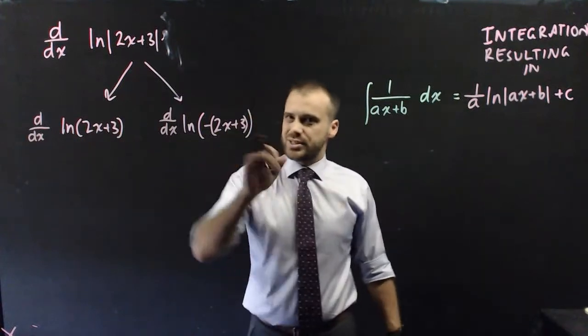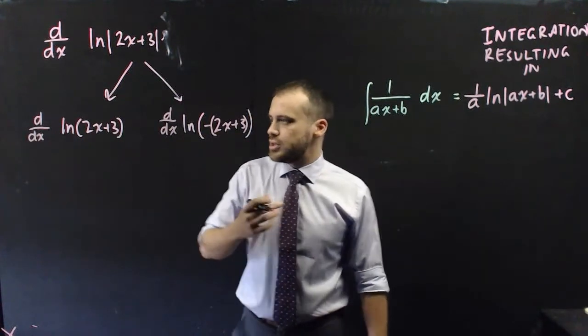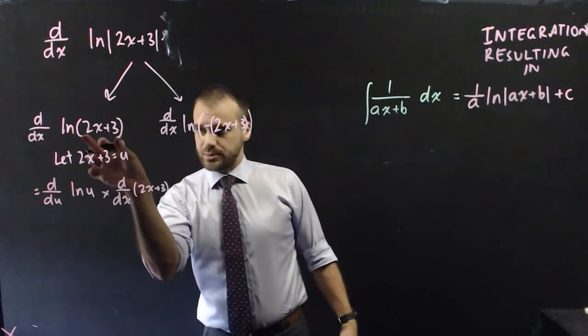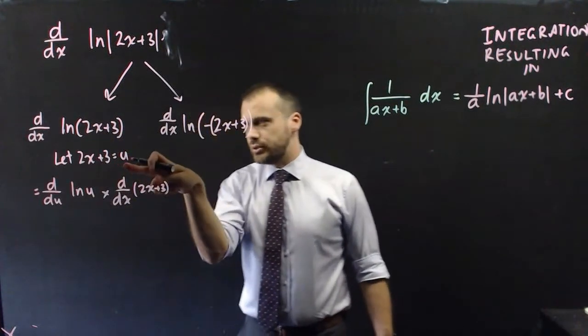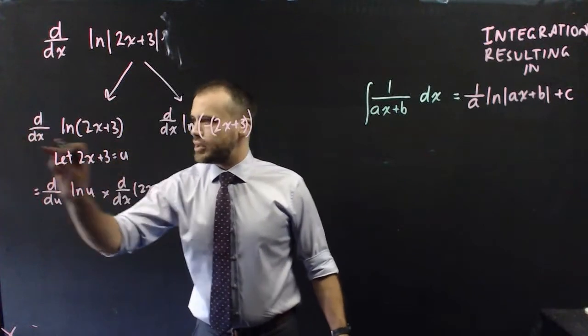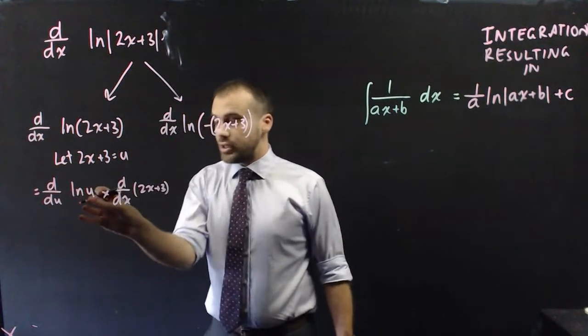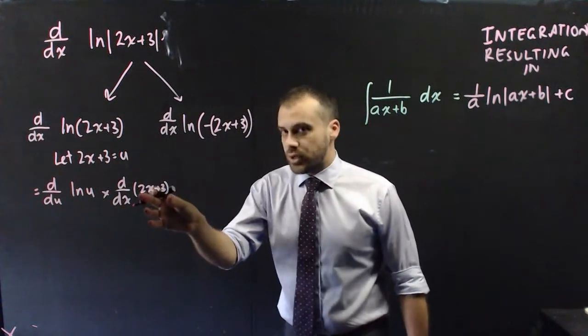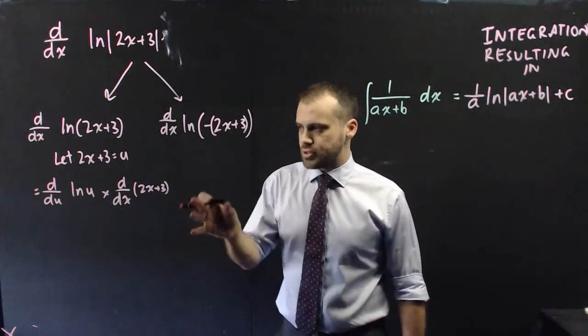Now, both of these are examples of chain rules. So, this derivative here, I'm going to let that 2x plus 3 equal u. And the derivative of all of that is going to be equal to the derivative of ln u, replacing that with u, times the derivative of whatever u was, 2x plus 3.